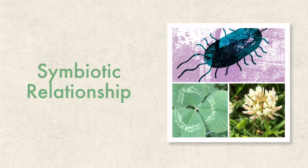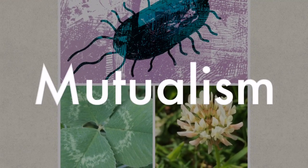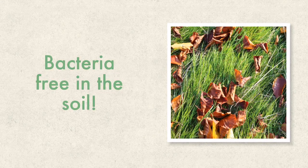There is a symbiotic relationship between the bacteria and the legume — a relationship in which they live in close proximity and at least one of them benefits. However, they both benefit in this case. The bacteria gain food and a place to live, and the plant gains nitrogen in the form of nitrate ions. As both the bacteria and the plant are gaining from the relationship, it's known as mutualism.